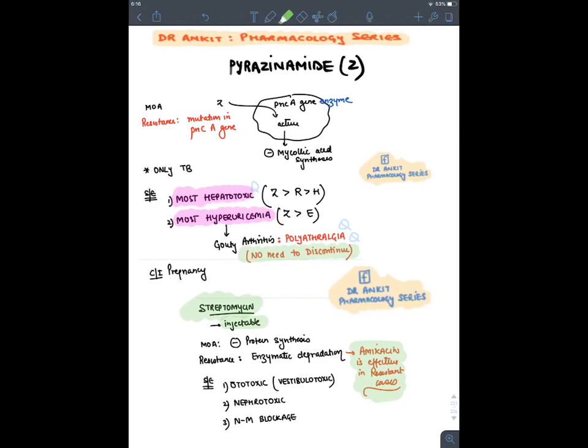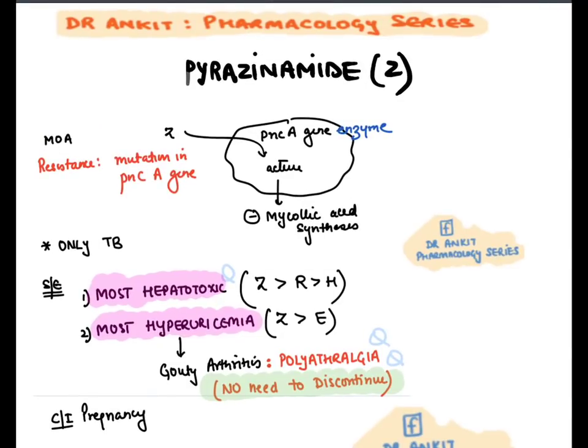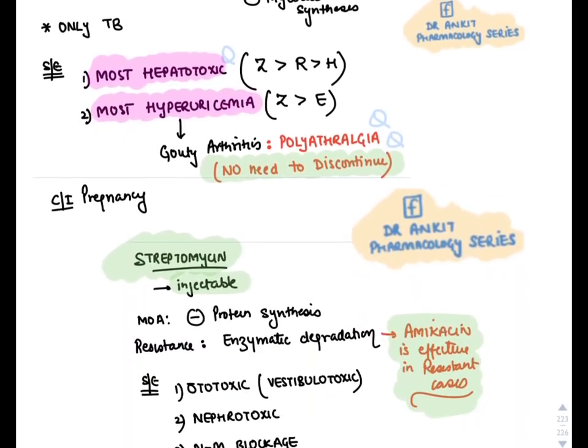Pyrazinamide: it enters the cell, gets activated by the pncA gene, and inhibits mycolic acid synthesis. It is only given in TB — it is one of the most toxic anti-tubercular drugs. It is the most hepatotoxic. Three hepatotoxic drugs are: pyrazinamide (most hepatotoxic), rifampicin, and isoniazid. It causes hyperuricemia leading to gout and polyarthralgia. Two drugs cause hyperuricemia: pyrazinamide and ethambutol. It is contraindicated in pregnancy.